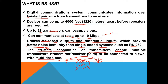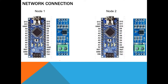These are the main features that make this module very important and very famous in industrial applications. Now we come to the connection between the Arduino and the RS-485 modules. We have two nodes — Node A and Node B. To connect them, we connect RE with DE and connect that to pin number 12.